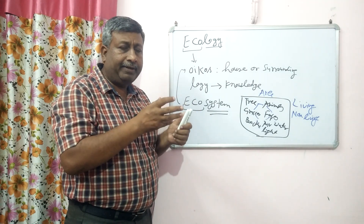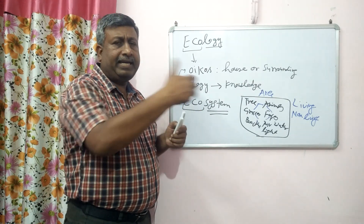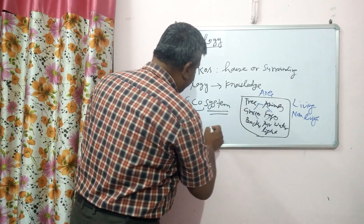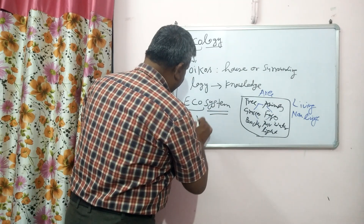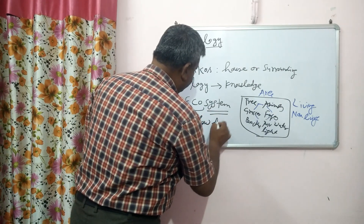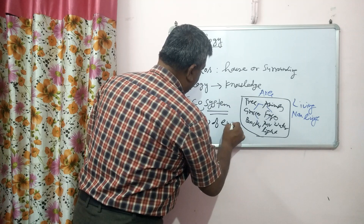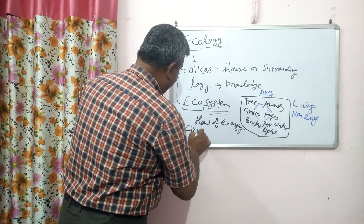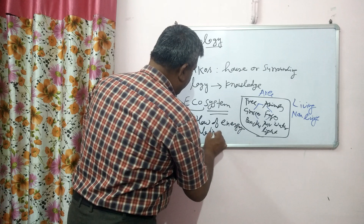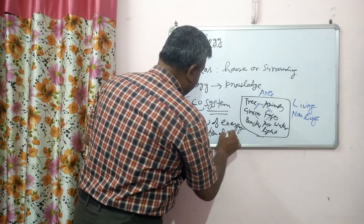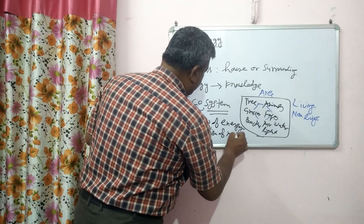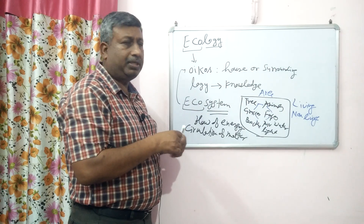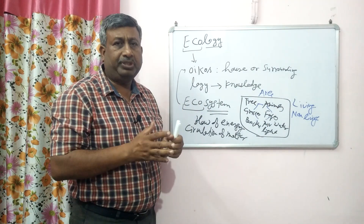So they are interrelated — in flow of energy and circulation of matter — and then it makes a system, then it is called an ecosystem.